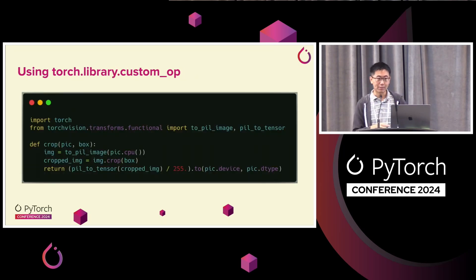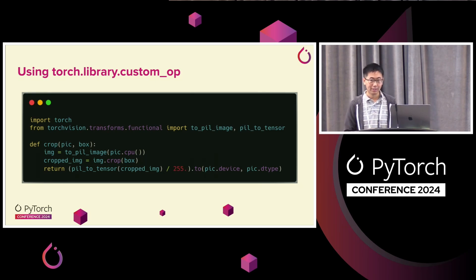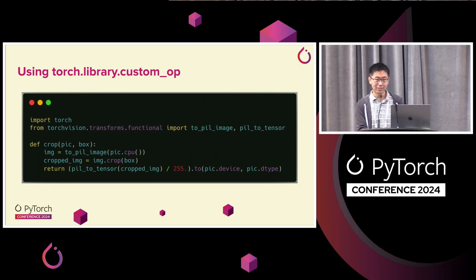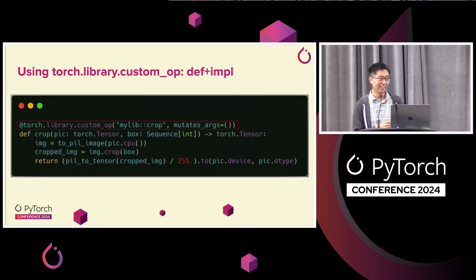Let me go through the three types of custom operators and show how to actually use them. Starting with the Python API: let's say you have some third-party library calling into the Pillow crop operation. You've got a crop function — it takes your tensor, turns it into a Pillow image, calls crop, and puts it back into a Torch tensor. This function is not a custom operator; it does not work with Torch.compile or Autograd or anything else. To turn it into a custom operator, you just need to add a decorator — you attach torch.library.custom_op to your function, and it's a custom operator.